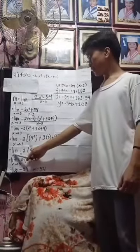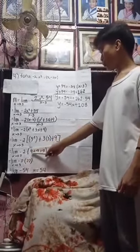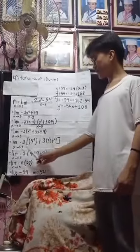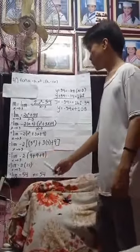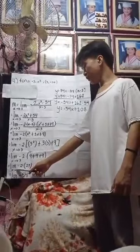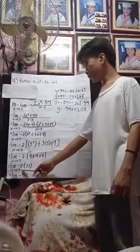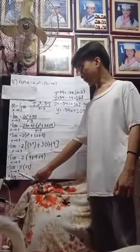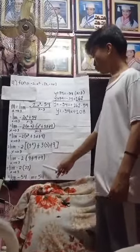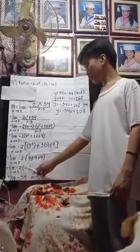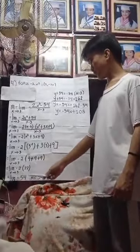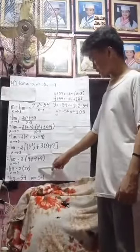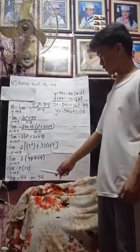So we have the limit of negative 2 times 9 plus 9 plus 9 as x approaches 3, which equals the limit of negative 2 times 27 as x approaches 3, which equals negative 54. So we have our slope: m is equal to negative 54.